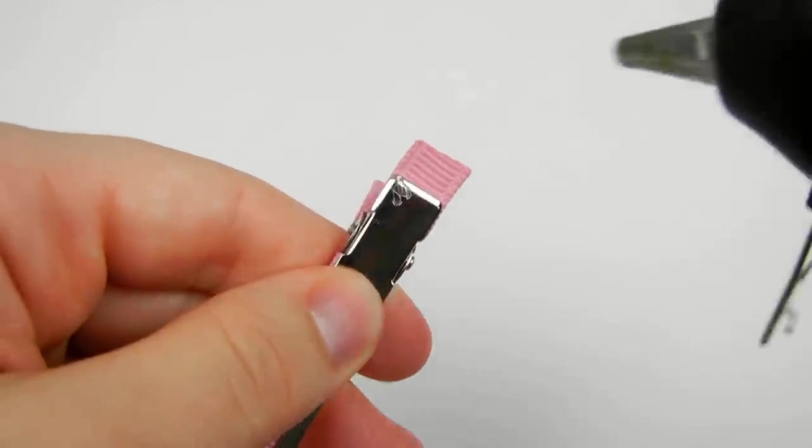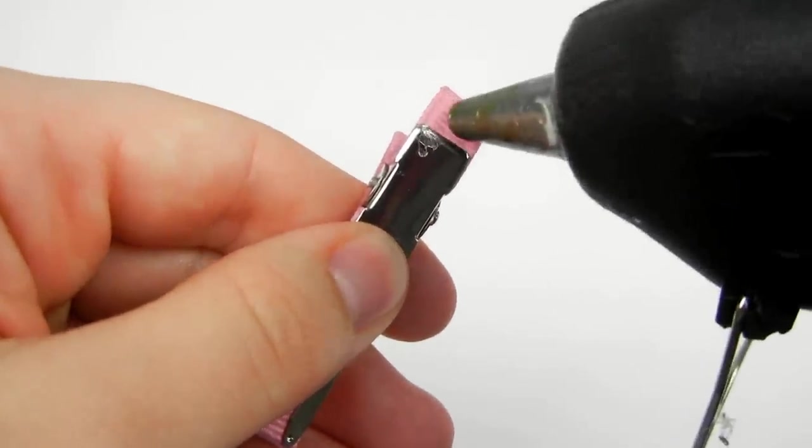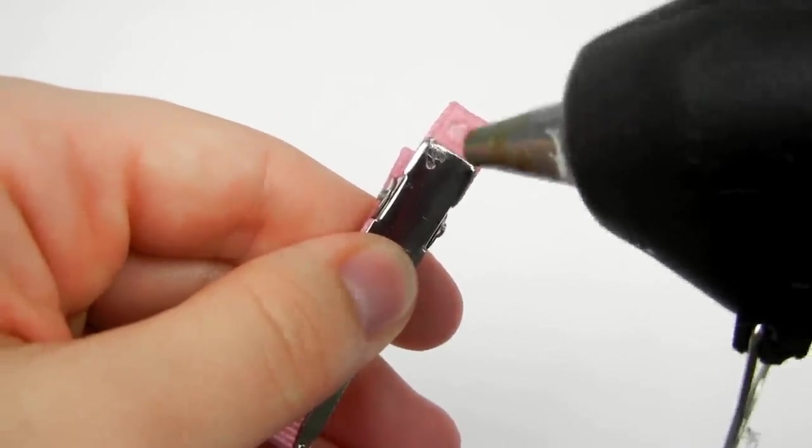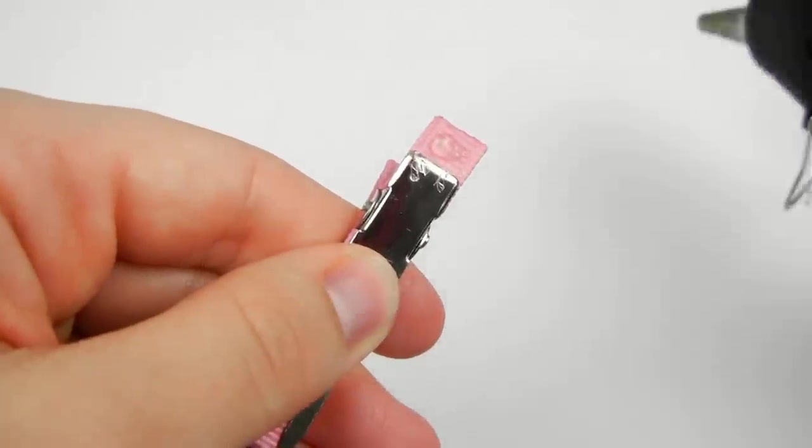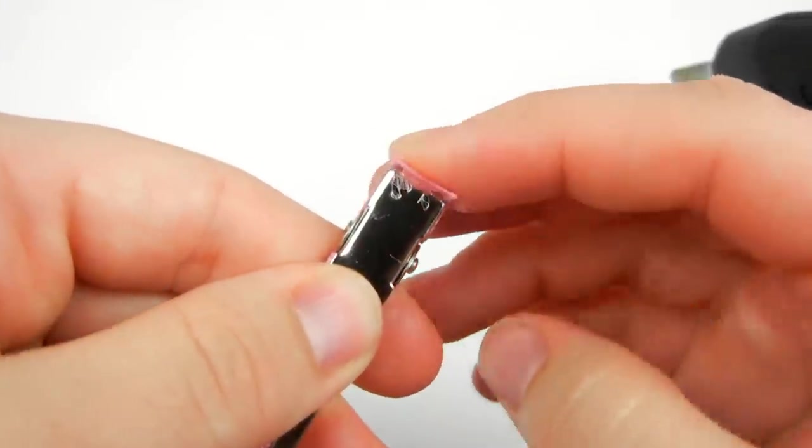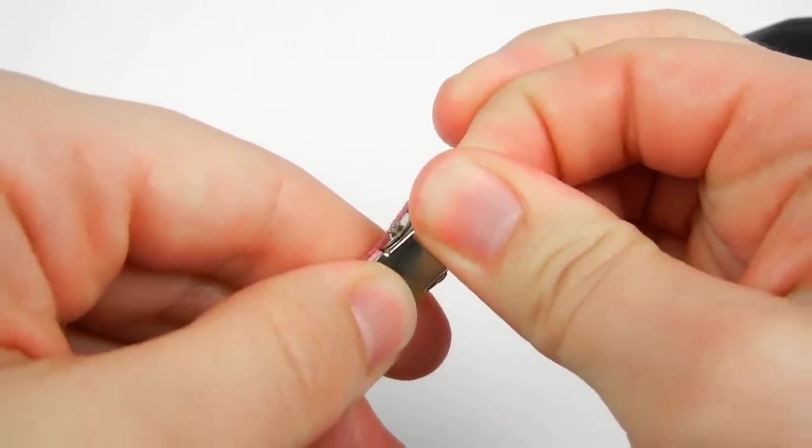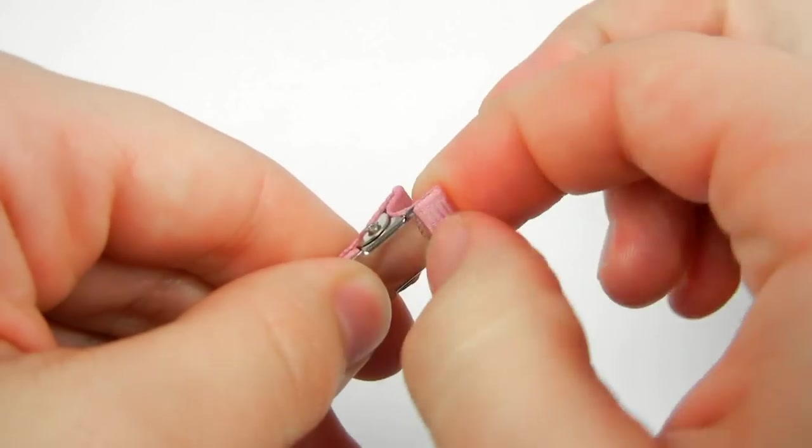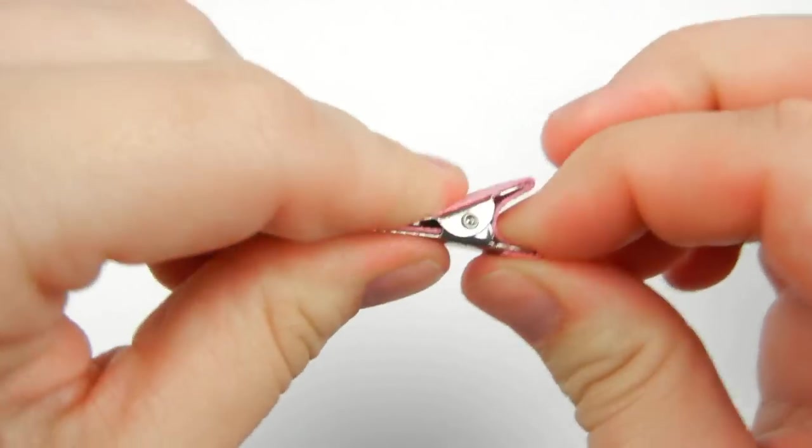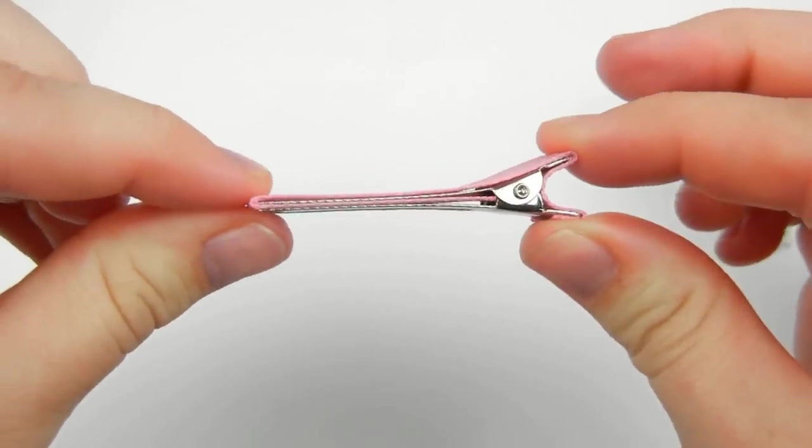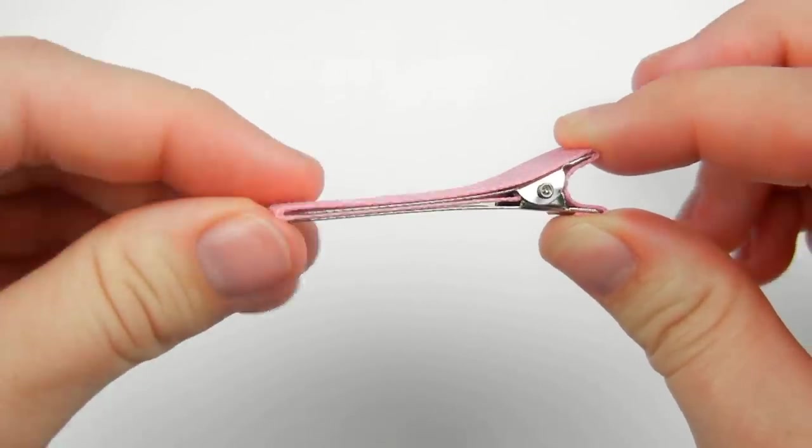And fold it over. Then put a little bit more glue on the end of your ribbon and fold it over. Just hold it there for a little bit. And there you've got a perfectly lined clip ready to be attached to your bow.